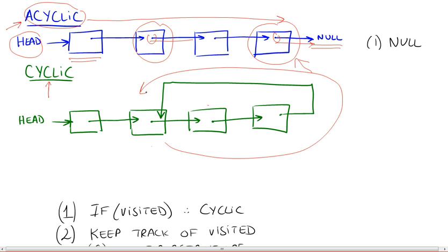And we'd never find this next pointer pointing to null. So we need another approach here. What do we do? We could, for example, use an attribute within every single node called visited.